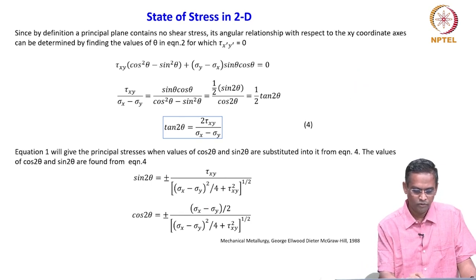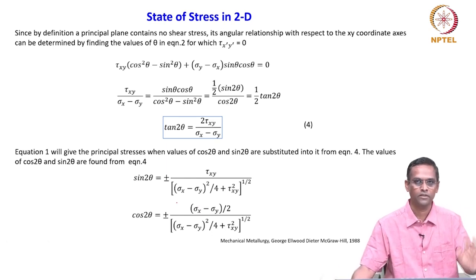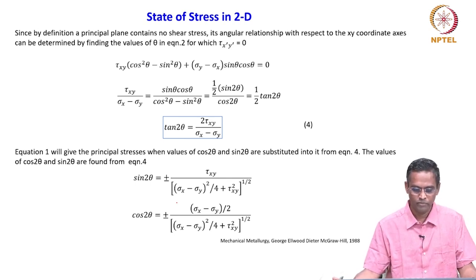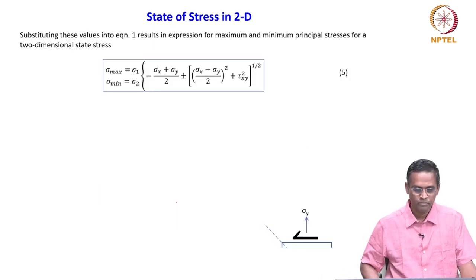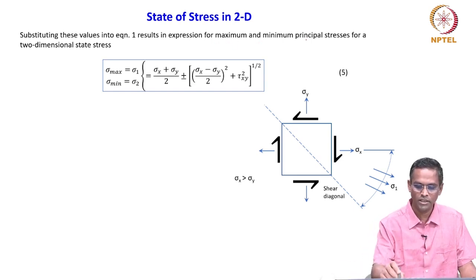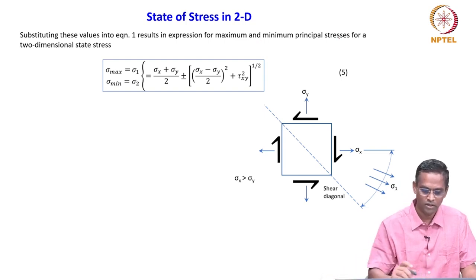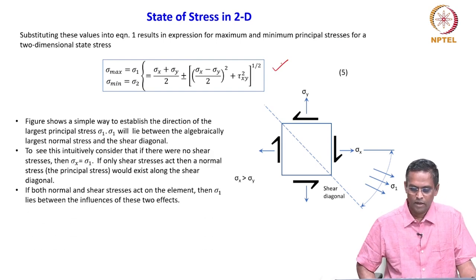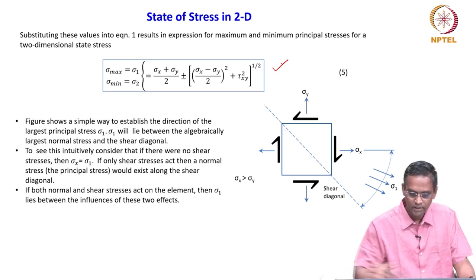The use of finding sin 2θ and cos 2θ is that we can plug these values into the general expression derived for σ_x′ and σ_y′ to find the principal stresses on an oblique plane. This is the final expression — substituting the sin and cos values into equation 1 results in the expression for maximum and minimum principal stresses for a two-dimensional state of stress.